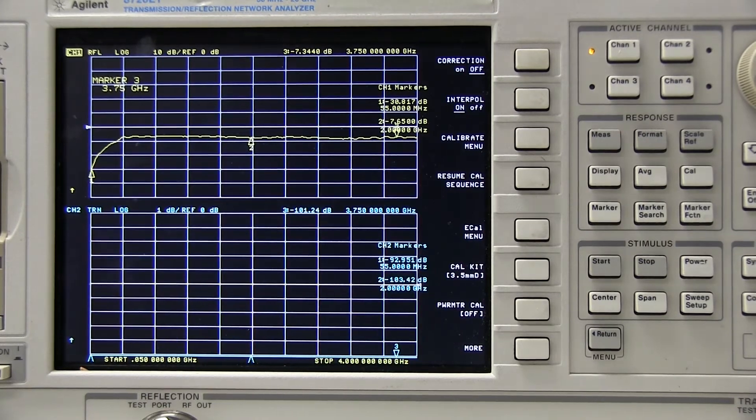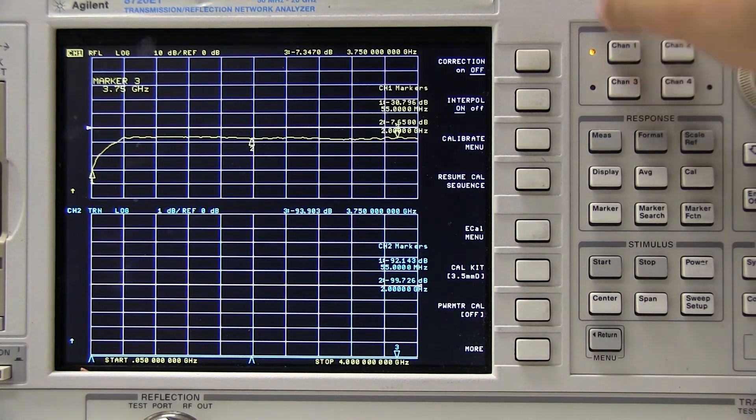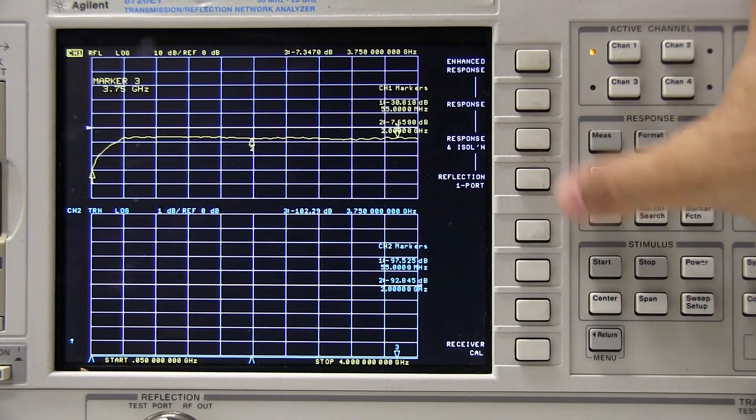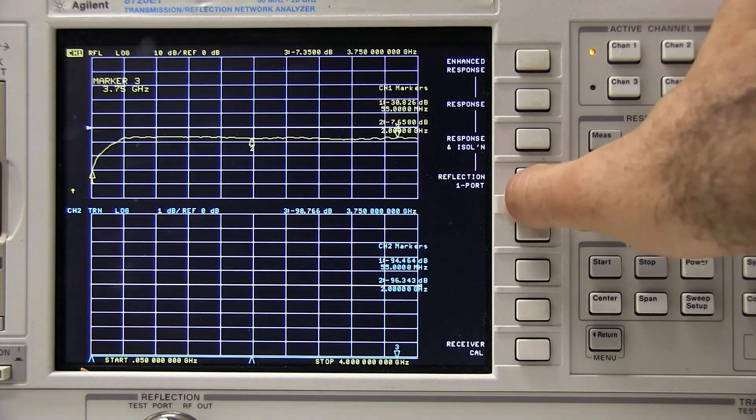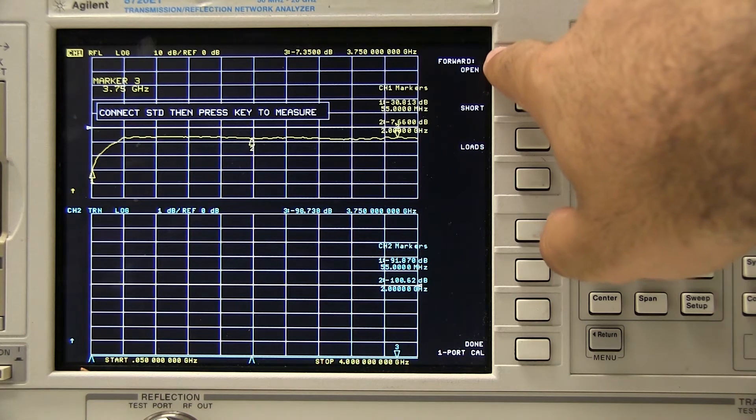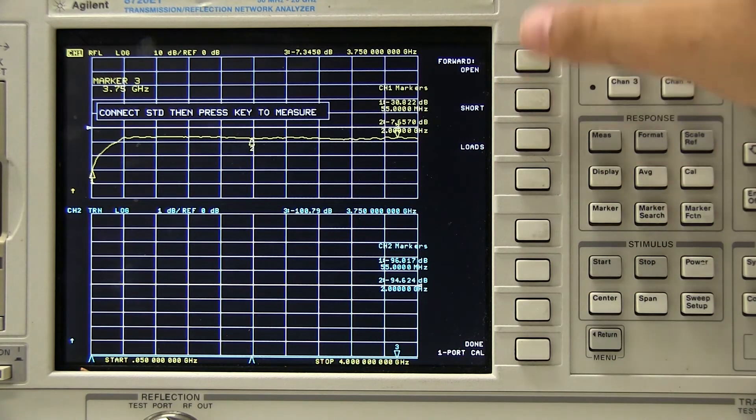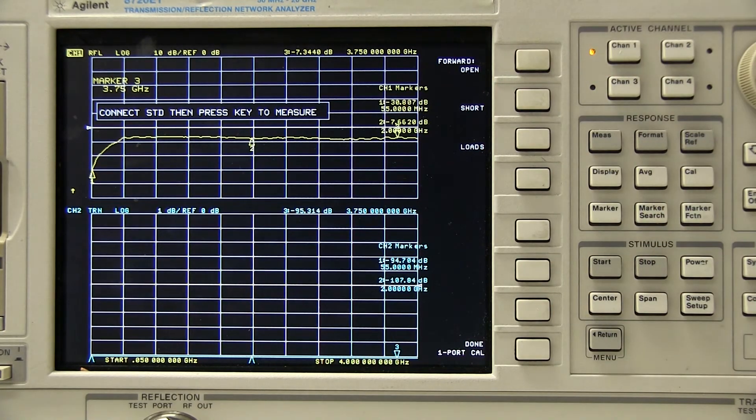So, to calibrate the input reflection channel, we are going to select channel 1, go to the calibration menu, and select the reflection 1 port menu item. It's going to give us three prompts here. We're going to connect an open, a short, and a load here. And every time we connect it, we're going to press the key to tell it what one we've connected. Now we'll start with the open. I've got the open right here.